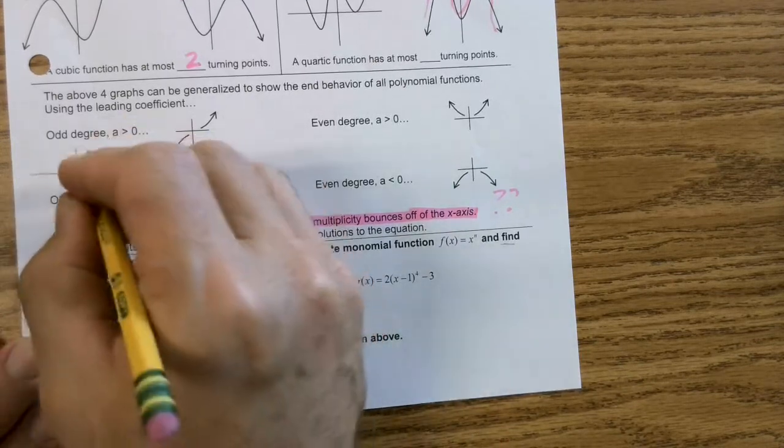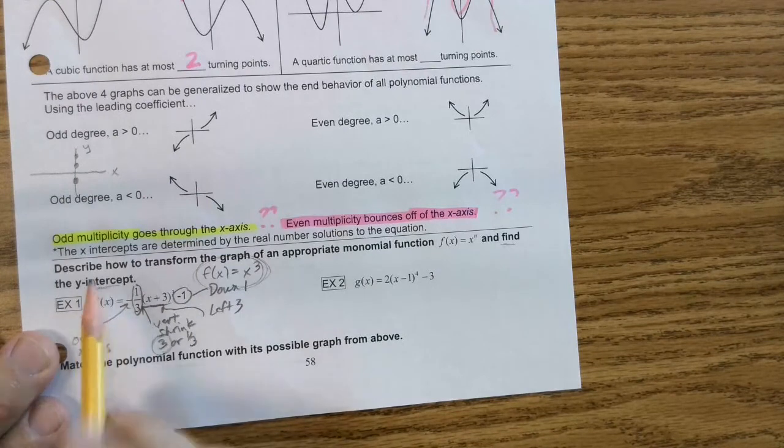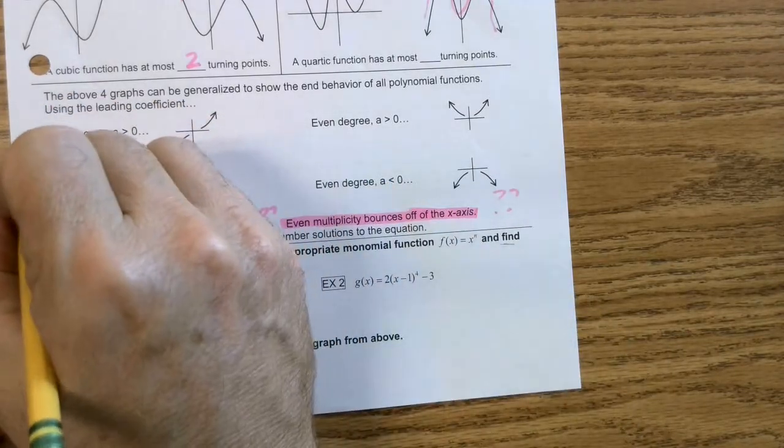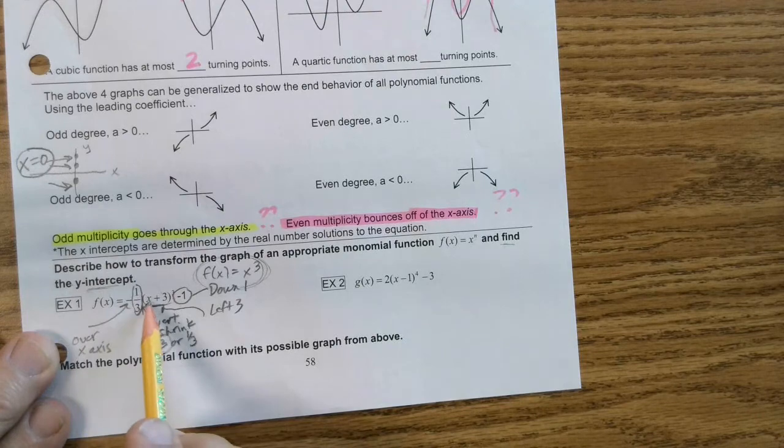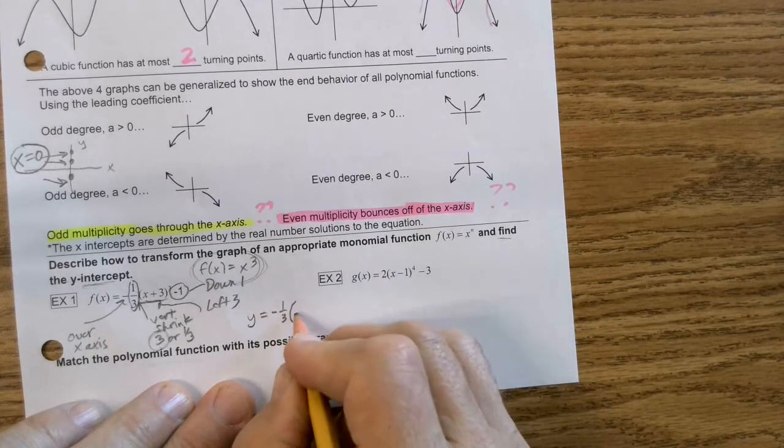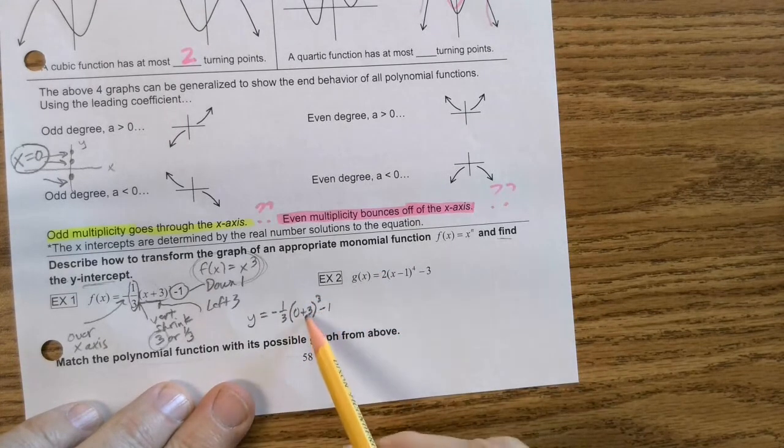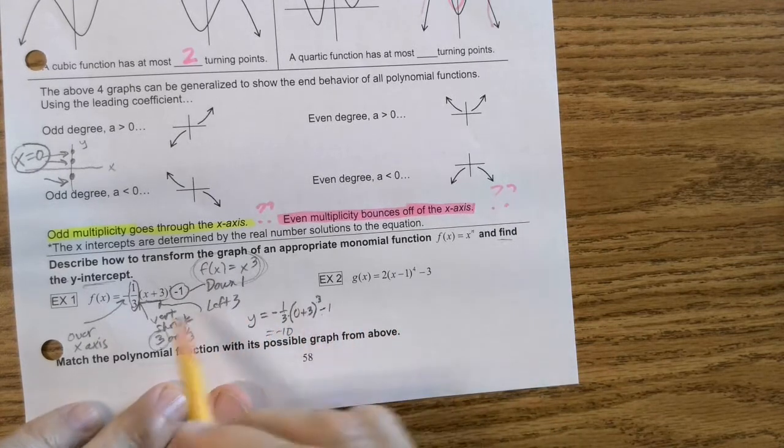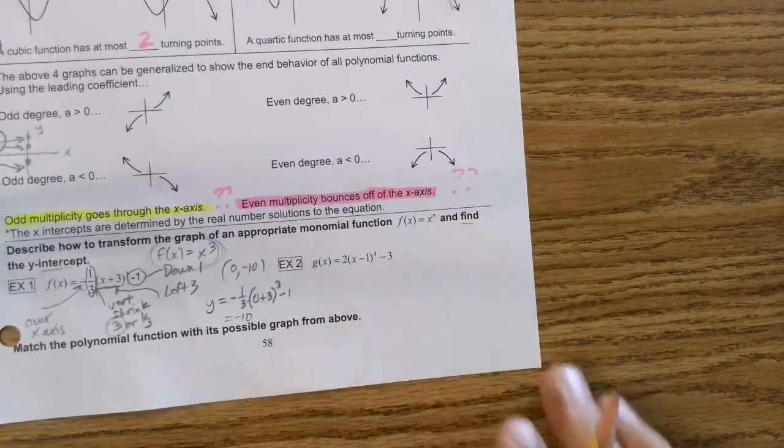Now, because there's limited space here, I'm going to bring it up here, because it does say find the y-intercept. Think about this, guys, if I have an x-axis and a y-axis, and I have a point somewhere on the y-axis, I know a truth about all of these points that are on the y-axis. x has to equal 0. That's a fact. So when you say find the y-intercept, that's saying put a 0 in there. So I'm going to go y equals negative 1 third, 0 plus 3 cubed, minus 1. What's 3 cubed? 27 times a third, 9. Negative 9 minus 1 would be negative 10. So my y-intercept would be 0, negative 10.